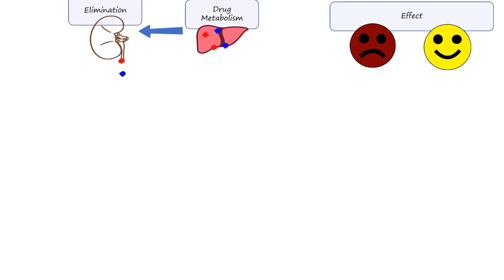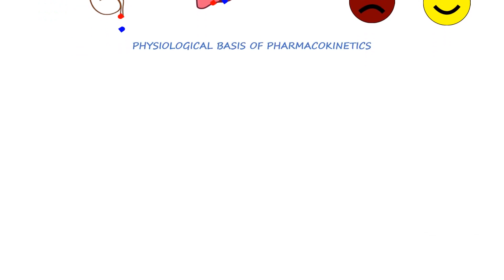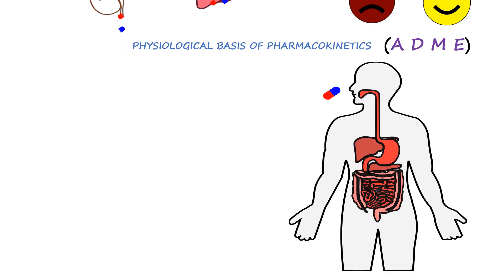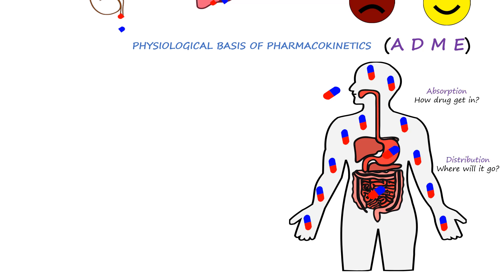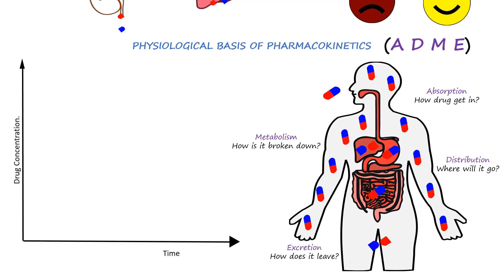Let's look into the pharmacokinetics principles first. Pharmacokinetics is the study of drug movement in, through, and out of the body. It is the study of processes by which a drug is absorbed, distributed, metabolized, and eliminated by the body. These four processes explain how drug levels in the blood change over time.